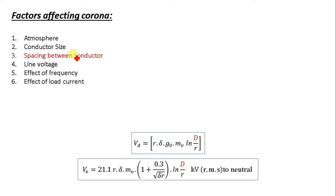The next factor is the spacing between conductors. If the spacing is made very large compared to the diameter — for example, if two conductors are placed far apart — there may be no corona effect. Large distance between conductors reduces the electrostatic stress at the conductor surface, thus avoiding corona formation.